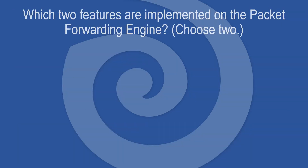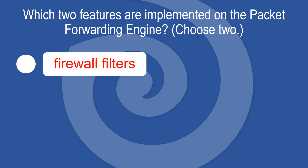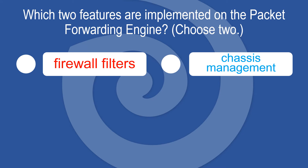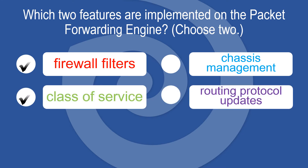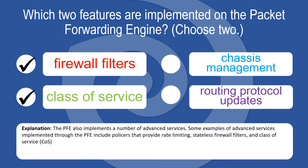Which two features are implemented on the packet forwarding engine? Choose two: Firewall filters, Chassis management, Class of service, Routing protocol updates. The PFE implements advanced services including policers that provide rate-limiting, stateless firewall filters, and class of service.